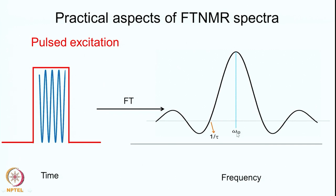Omega naught is the RF frequency, and the first null in the profile occurs at 1/tau. If tau is of the order of 1 microsecond, this will be 1 megahertz on either side, so it covers a whole range of megahertz. However, all of these frequencies will have different amplitudes and therefore different powers. We do not want that — we need uniform excitation over the spectral range.